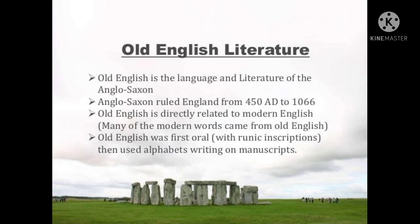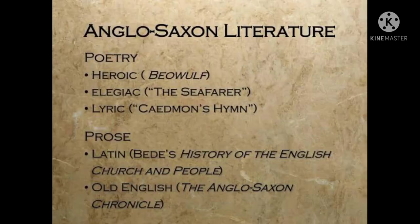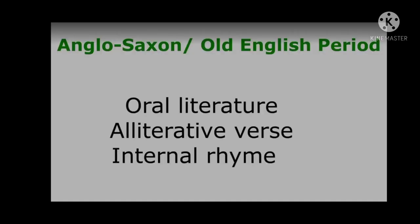Old English was first oral with runic inscriptions, then used alphabets written on manuscripts. Anglo-Saxon literature includes poetry: heroic, elegiac, The Seafarer, lyrics, Caedmon's Hymn. Also prose: Bede's History of the English Church and People, and The Anglo-Saxon Chronicle. The Old English period can be divided into three categories: Oral Literature, Alliterative Verse, and Internal Line.